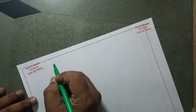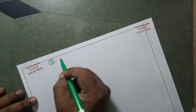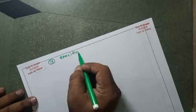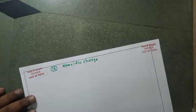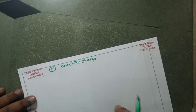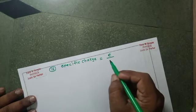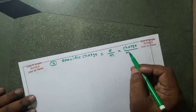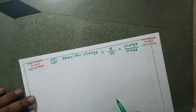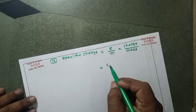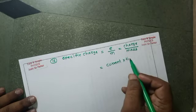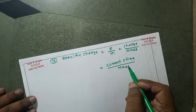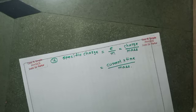The last physical quantity is specific charge, which is the ratio of charge to mass. Charge equals current times time, so the dimensional formula for specific charge is current times time divided by mass.